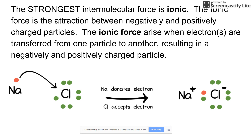The strongest intermolecular force is ionic. The ionic force is the attraction between negatively and positively charged particles, and it arises due to the transfer of electrons from one particle to another. Your particles could be ions, atoms, or molecules. The classic case is the sodium chloride reaction, where sodium — which has one valence electron — transfers it completely to chlorine. You end up with sodium chloride because this positive and this negative attract each other.